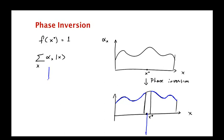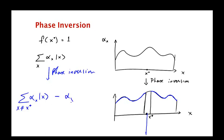Under phase inversion, the new superposition is the sum over all x not equal to x* of α_x |x⟩, minus α_{x*} |x*⟩. So instead of a plus α_{x*} you get a minus α_{x*}. We will see how to actually design a circuit that does this in the next video.